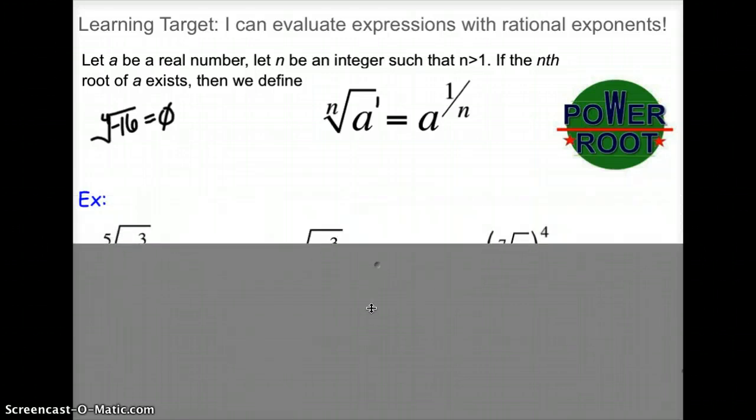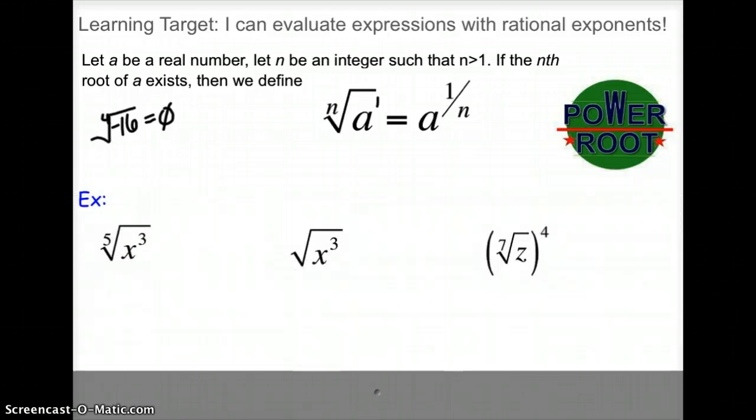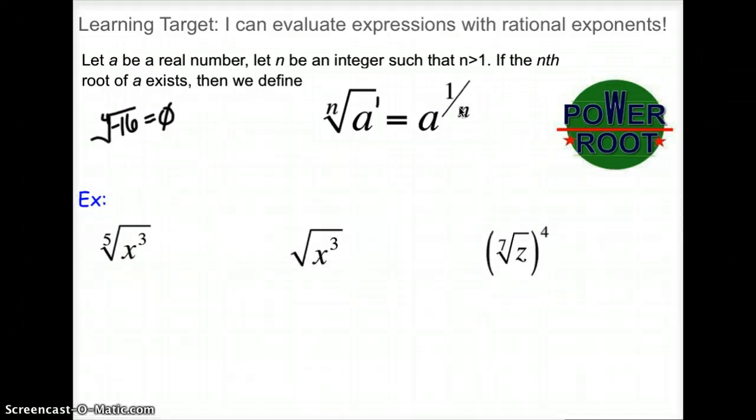So I just want to go through a few examples here of what to do to convert it to a rational exponent. So let's just start simple, and we'll work our way up. Obviously, we're going to have x as the base, but what's the power? What's the root? The power's on top. The power is a 3. The root is the index, which is a 5. So as a rational exponent, we would say this expression is equivalent to x to the 3 fifths power.